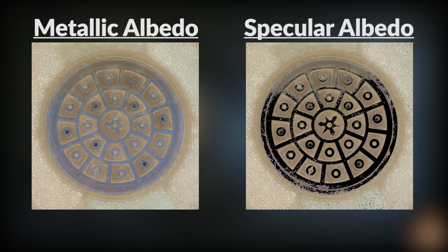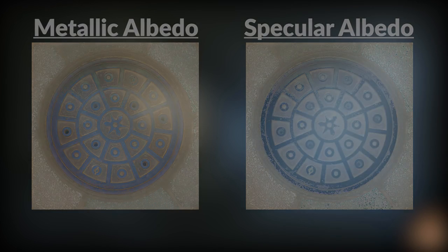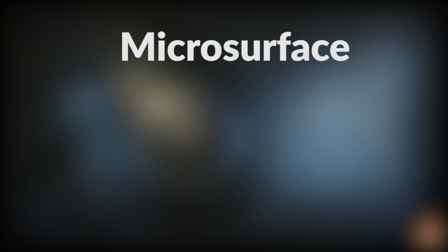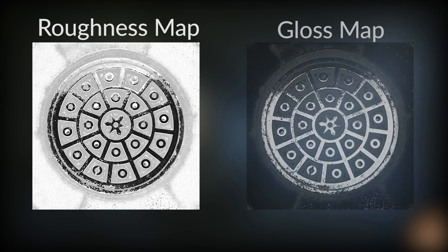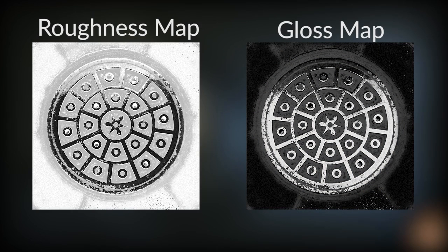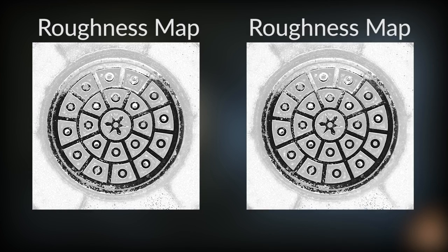In the specular workflow, since the color of the metallic reflection comes from the specular map, those areas of the base color map will be completely black. So an easy way to tell which workflow someone is using is to look at the base color to see if it contains the color for the metallics or not. The next piece of the puzzle for both workflows is the microsurface maps, which approximate the microscopic details on the surface of an object, making it appear either shiny or rough. This will either be called a roughness map or a gloss map, depending on the software you're using. They're exact opposites of each other though, so if you have a gloss map and you need a roughness map, just invert the colors.